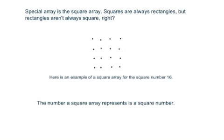Now we're going to talk about a special kind of rectangular array, and that's the square array. The reason why that works is because we know that squares are always rectangles, but rectangles aren't always square, right? So you can see I've drawn a square array, and we know it's a square array because it has the same amount of columns as rows. There are four rows going across the page, and four columns going up and down the page. So this is a square array for the square number 16. Make sure you understand that the number a square array represents is actually a square number.